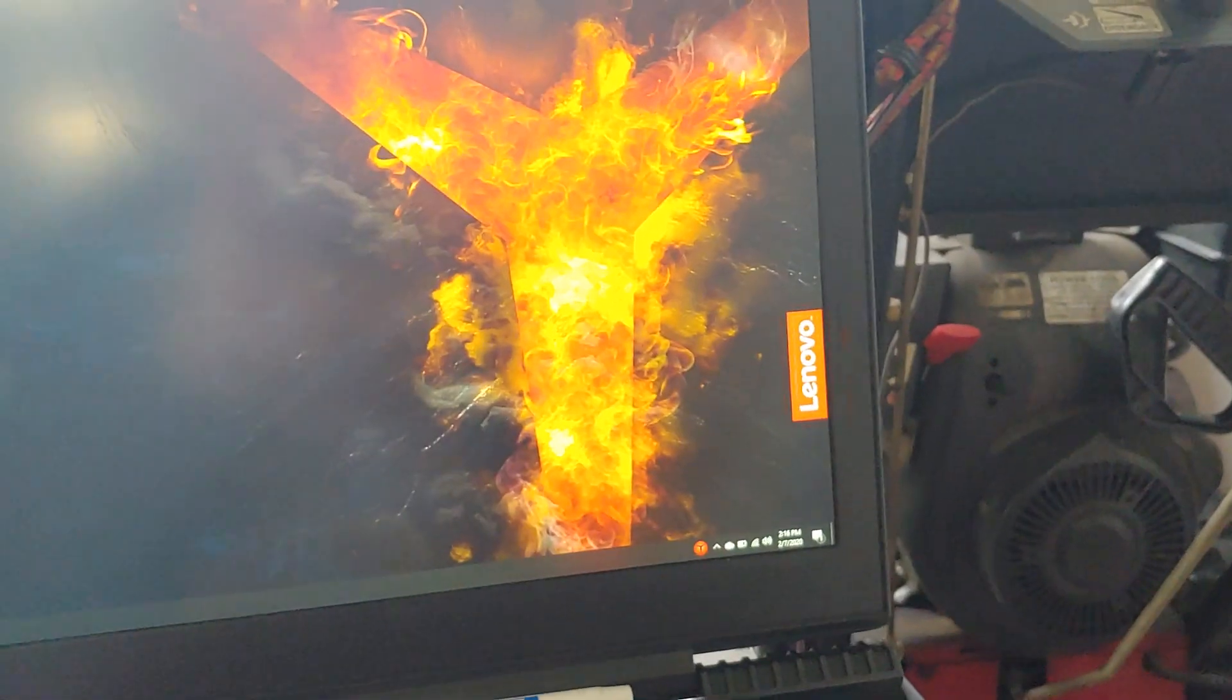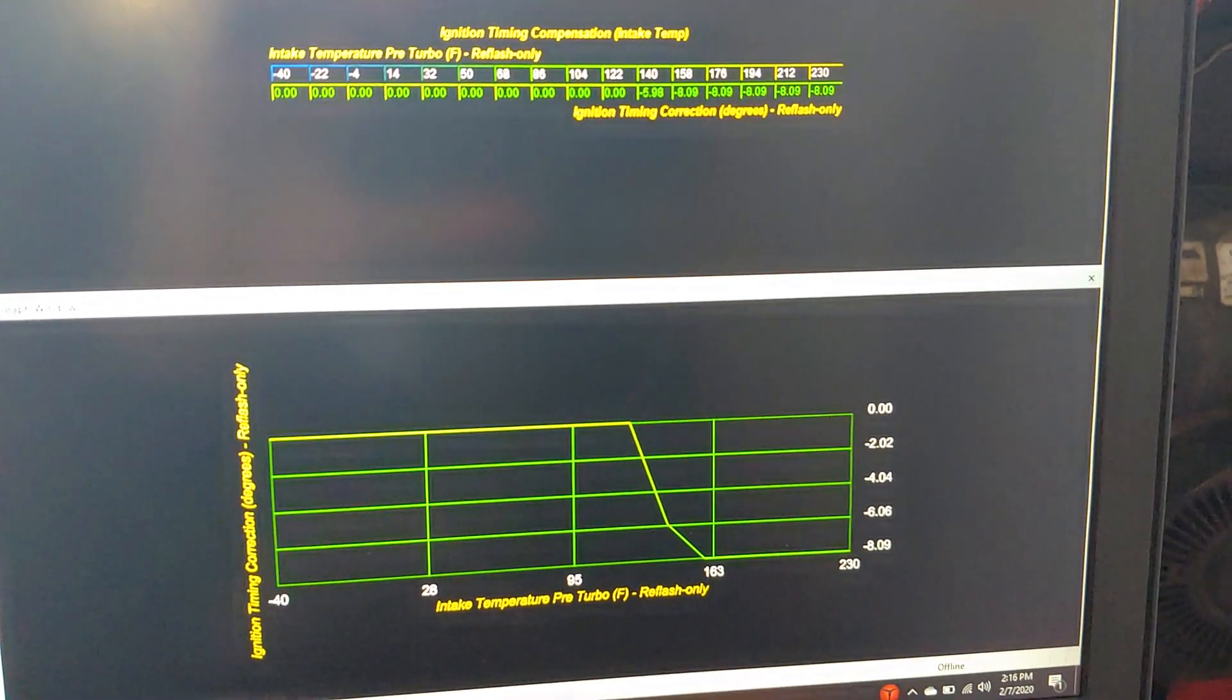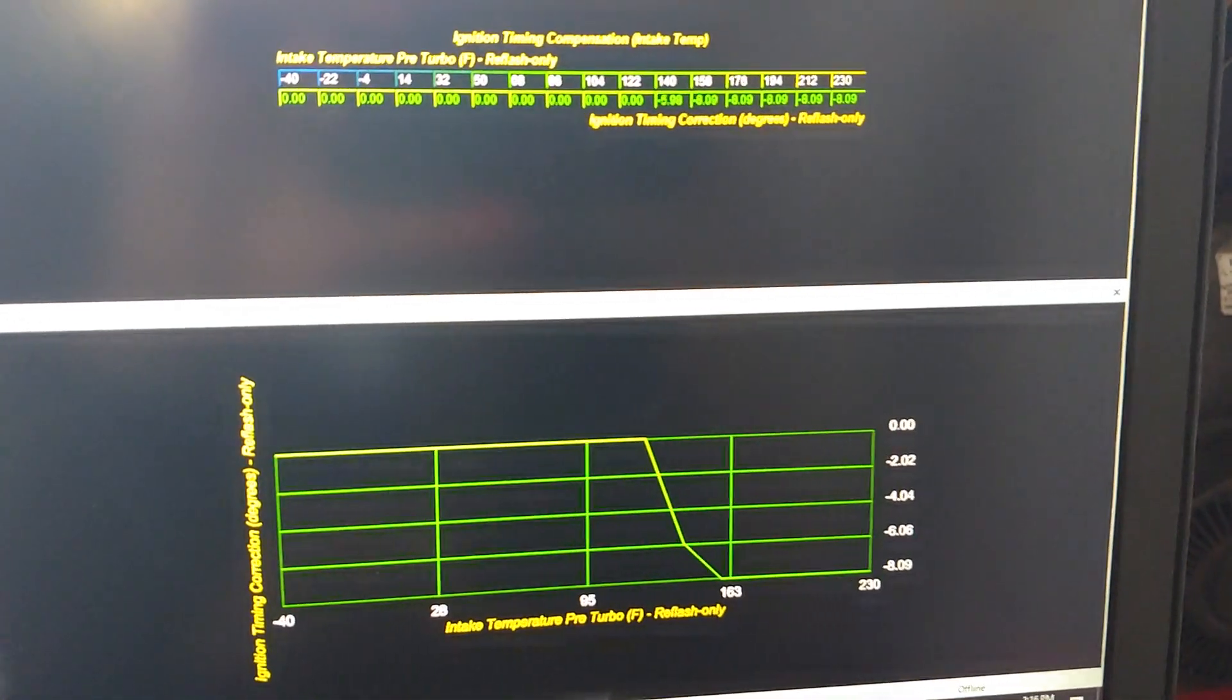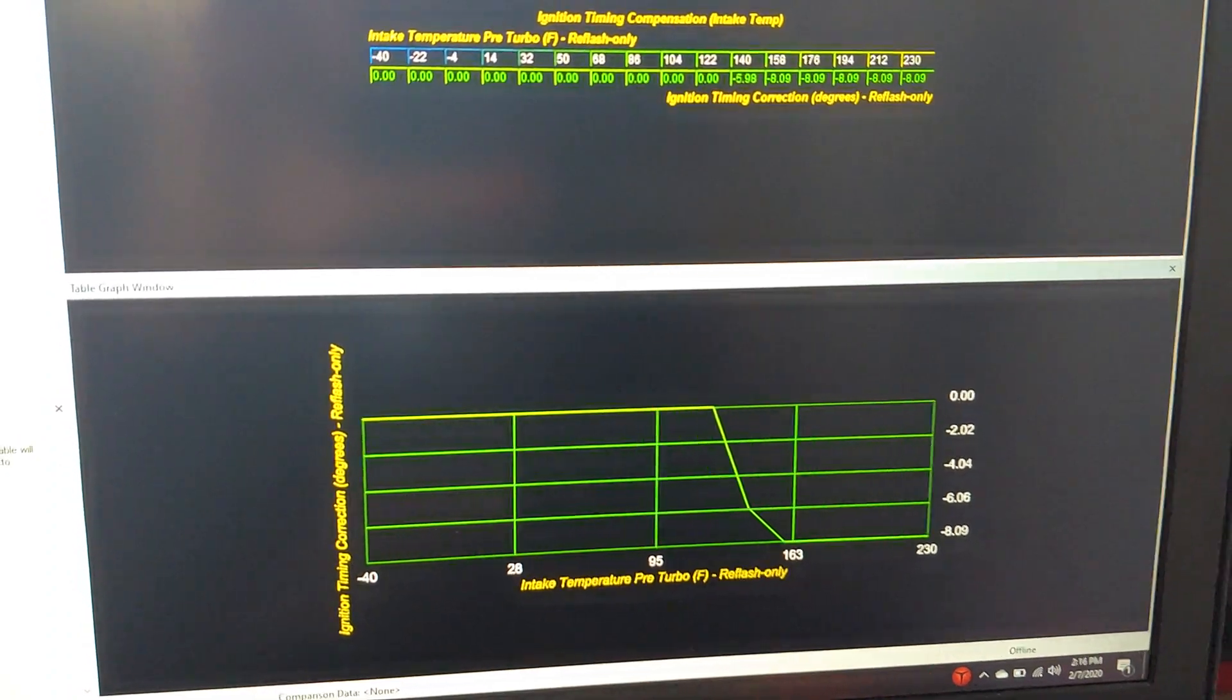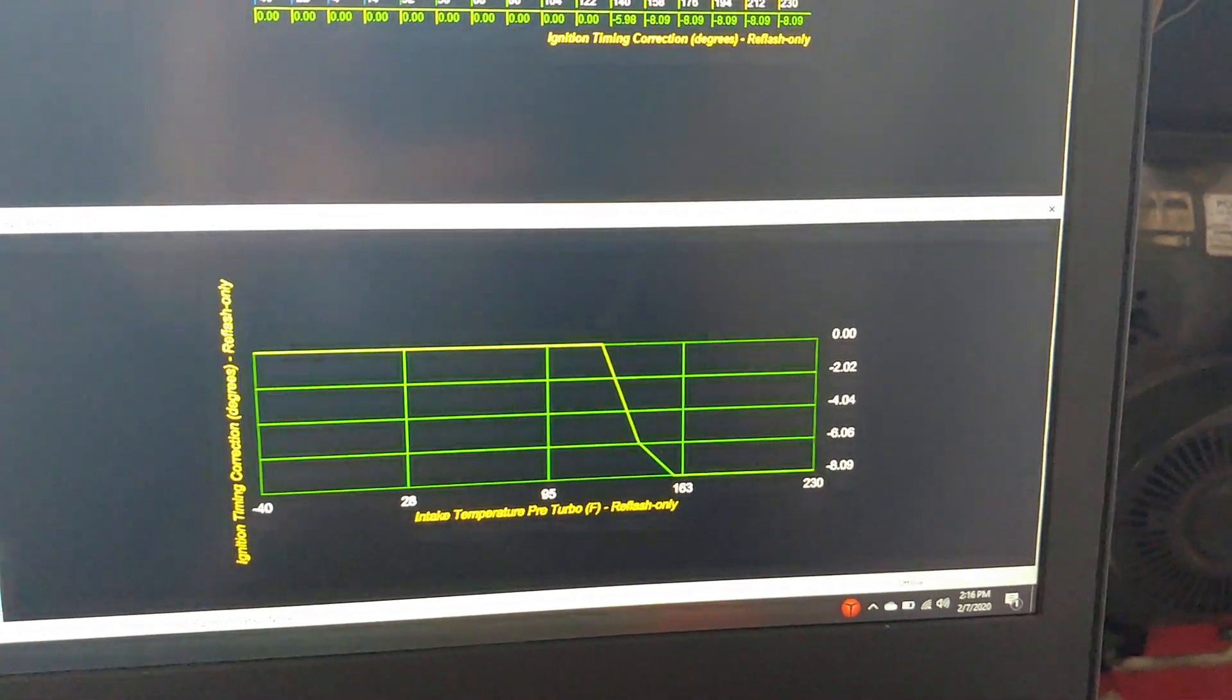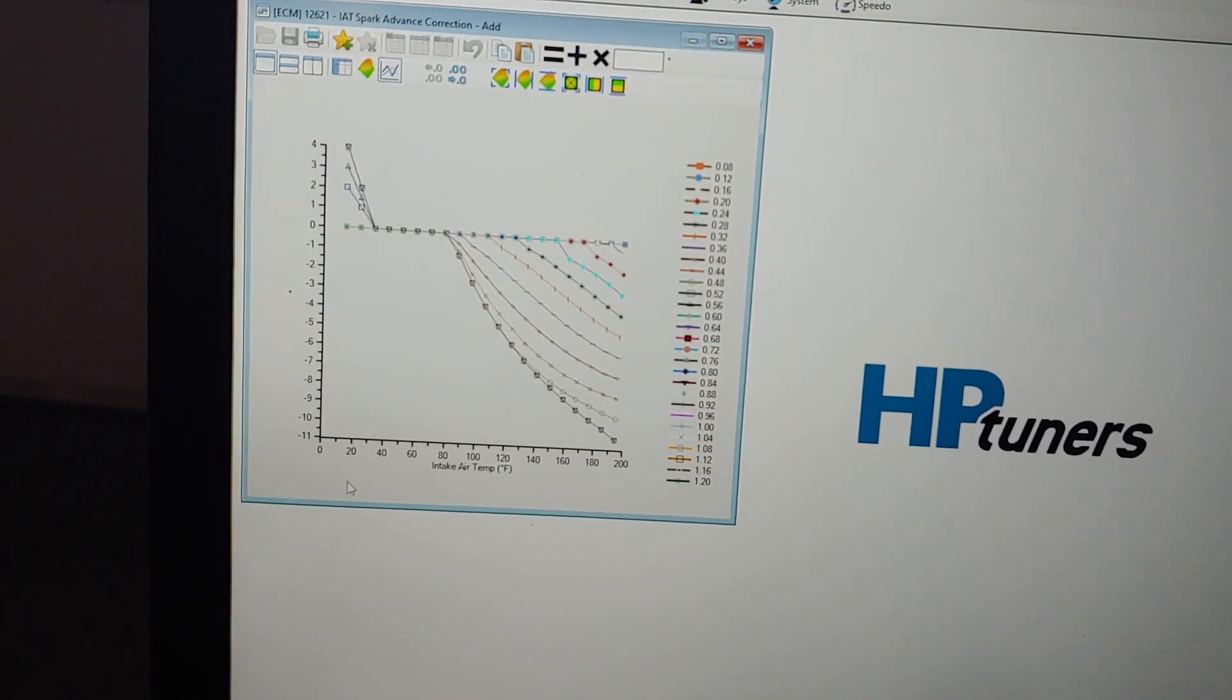Subaru, this is factory for an STI 04. You see they just tanked the timing from 120 up to 140 - they're pulling six degrees out of it. They're really trying to protect the engine there. This is HP Tuners, this is Chevy. Let me go to the other graph view for you.